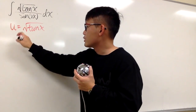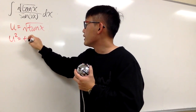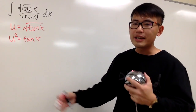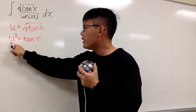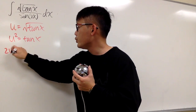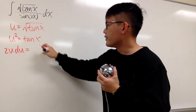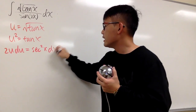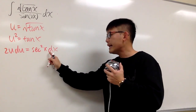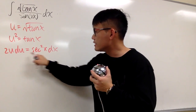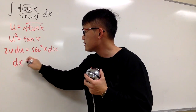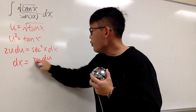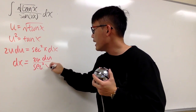Now look at this — let's square both sides. We have u squared is equal to tangent x, so we can differentiate both sides; it's easier this way. The derivative of u squared is going to be 2u du, and the derivative of tangent x is going to be secant squared x dx. I want to isolate dx, so let's divide by secant squared x on both sides. Therefore, dx is going to be 2u du over secant squared x.